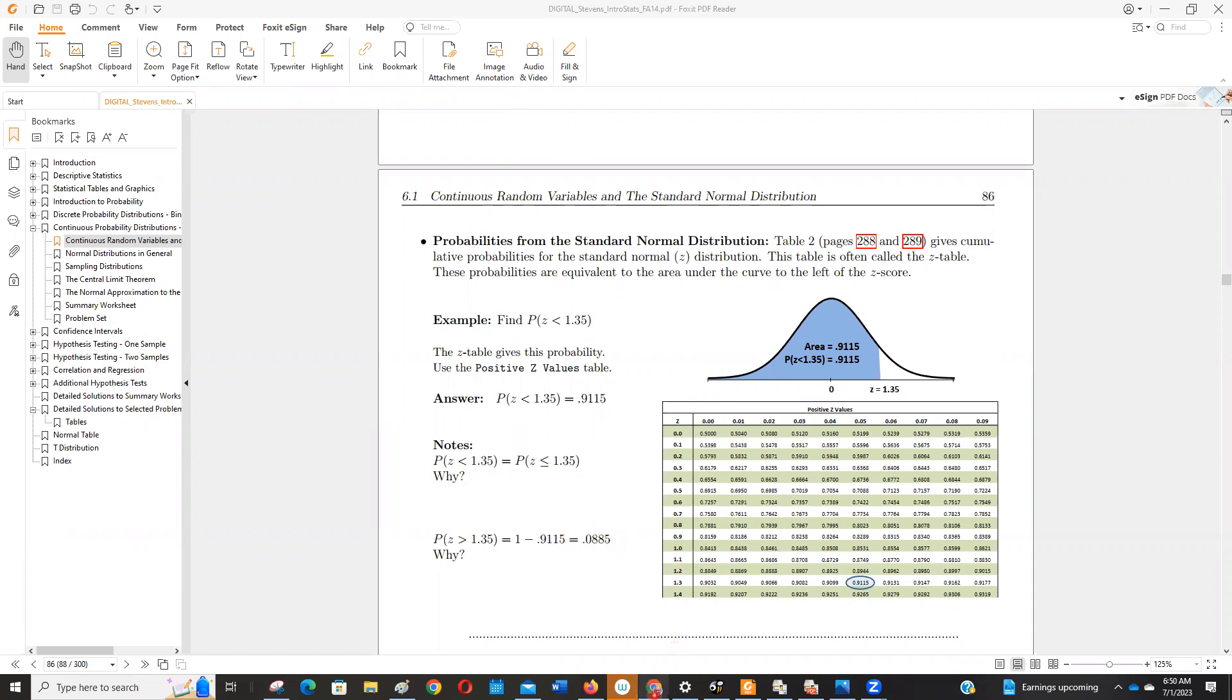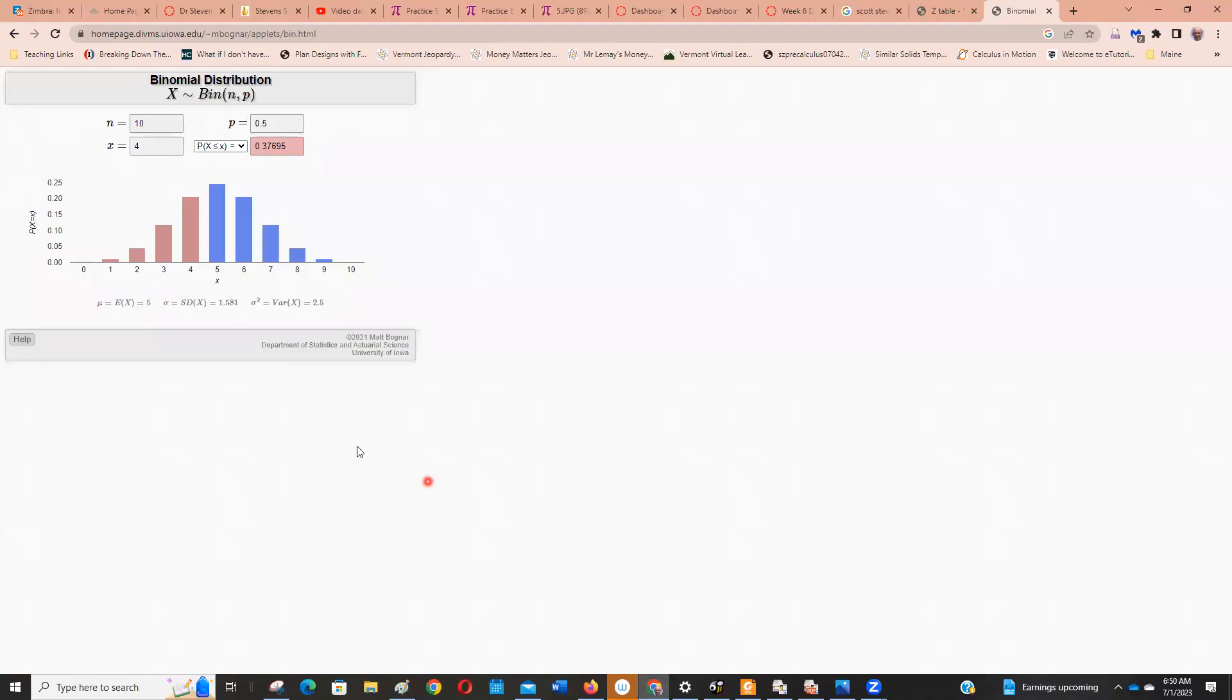Now, before I go to a normal curve, I'm going to kick us back to last week where we were talking about a binomial distribution. There were different probabilities for if X is here. If I was looking for the probability that X is less than 4 versus the probability that is less than or equal to 4.